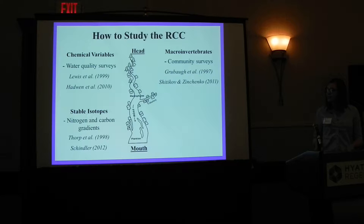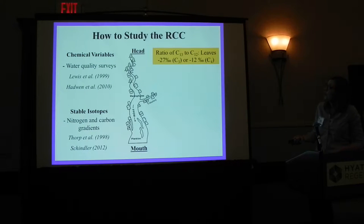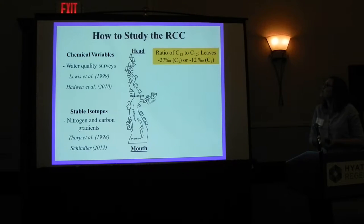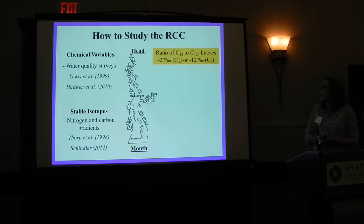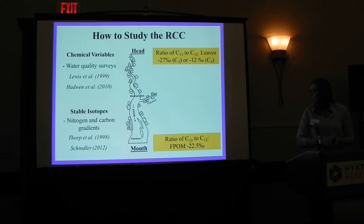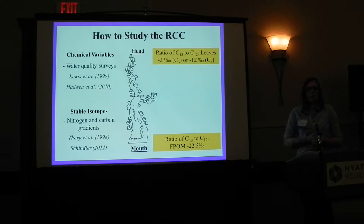A third way is to look at stable isotopes by examining nitrogen and carbon variants. You can look at these in organisms to see food webs and what trophic levels they're feeding on. The headwaters usually have a ratio of carbon-13 to carbon-12 associated with leaves, around negative 27 or negative 12 parts per thousand, which changes at the mouth of the river system to around negative 22.5 parts per thousand.